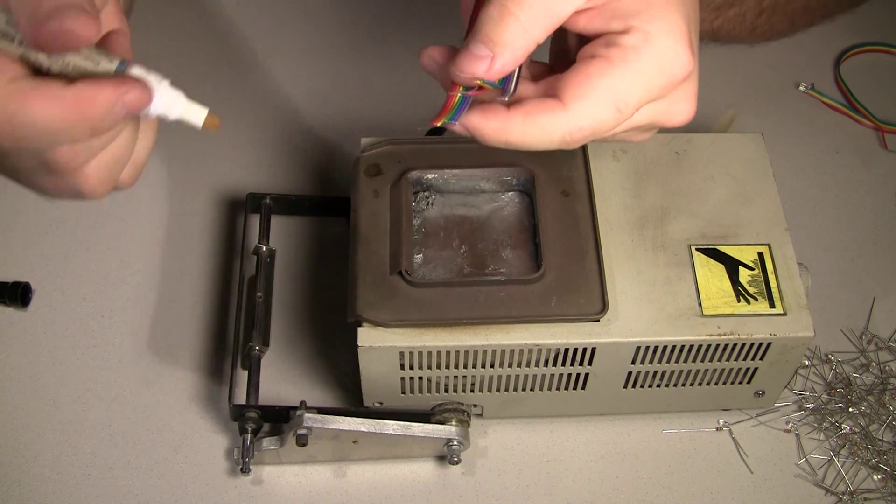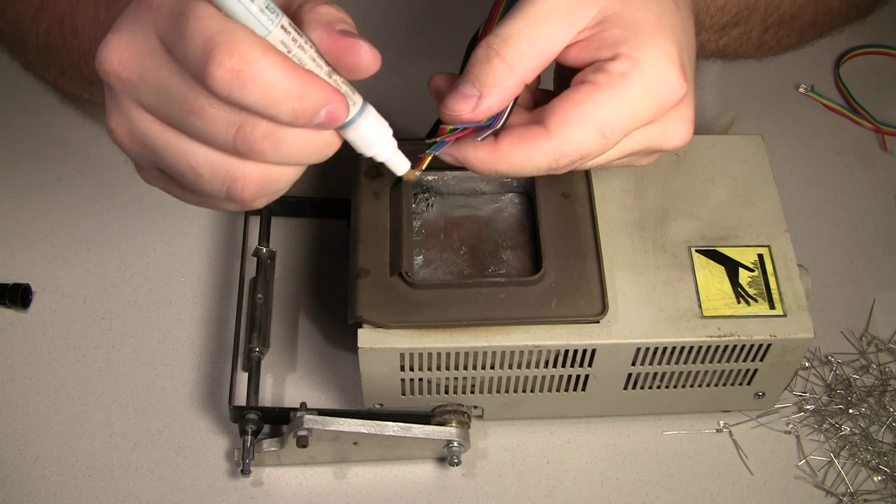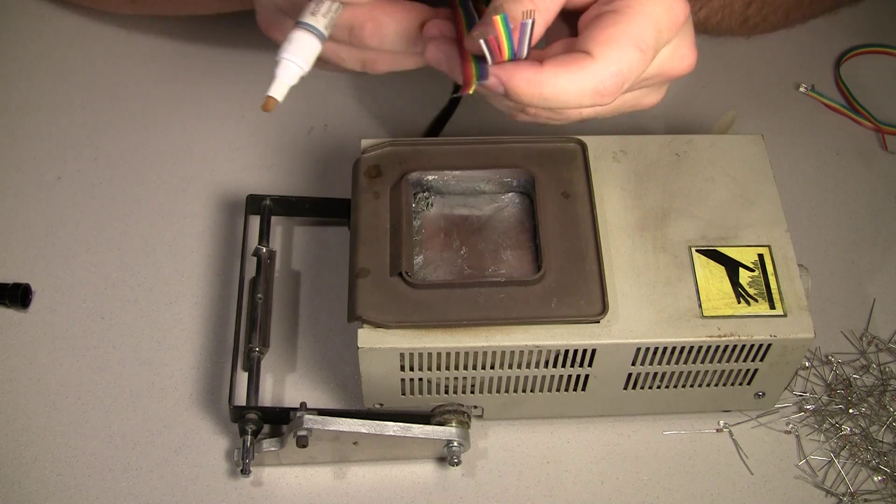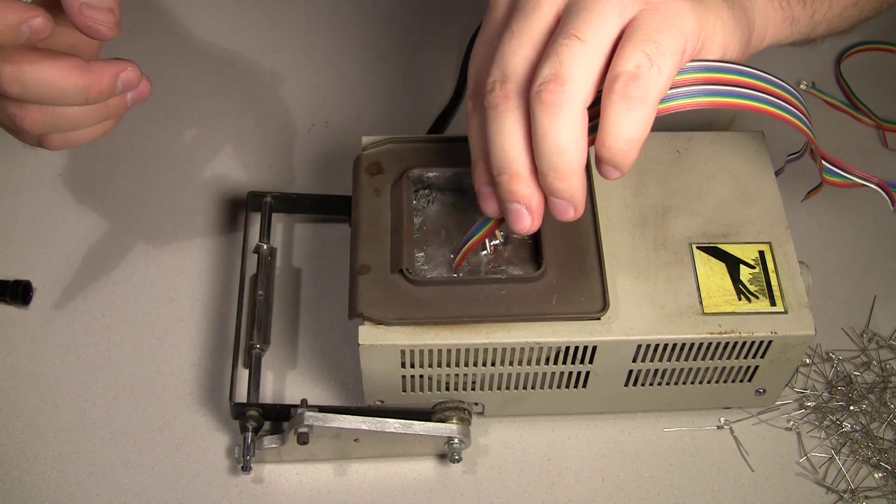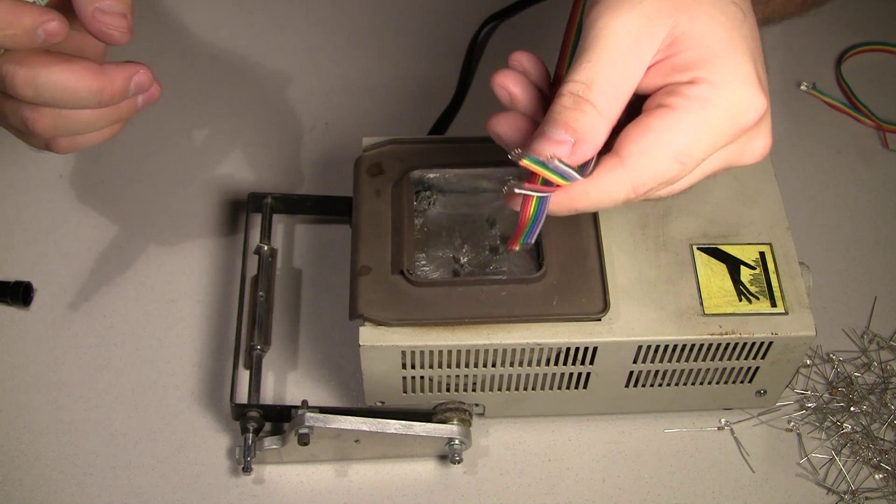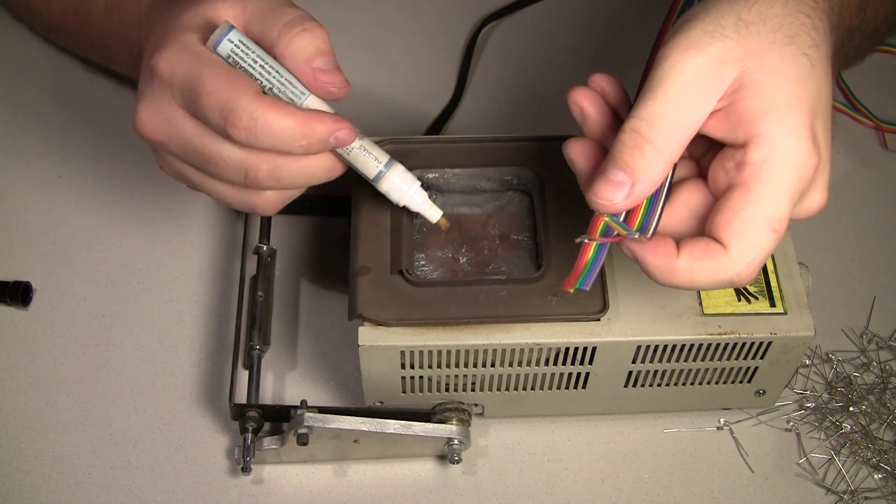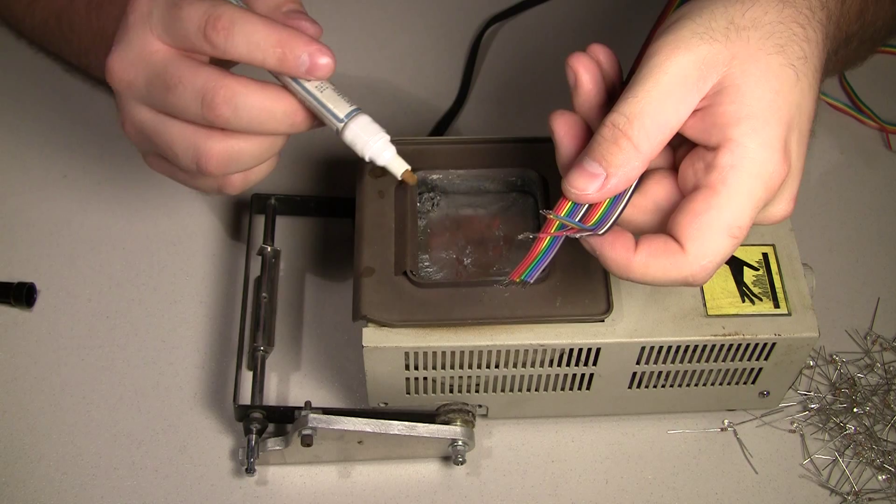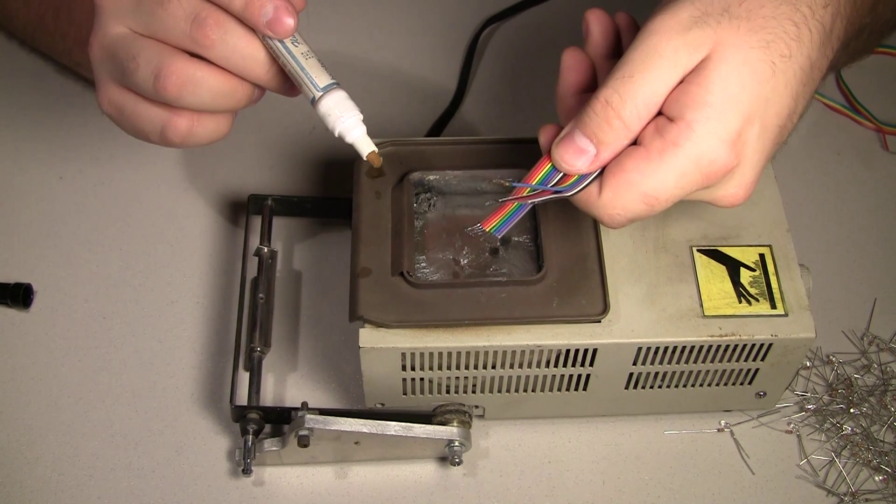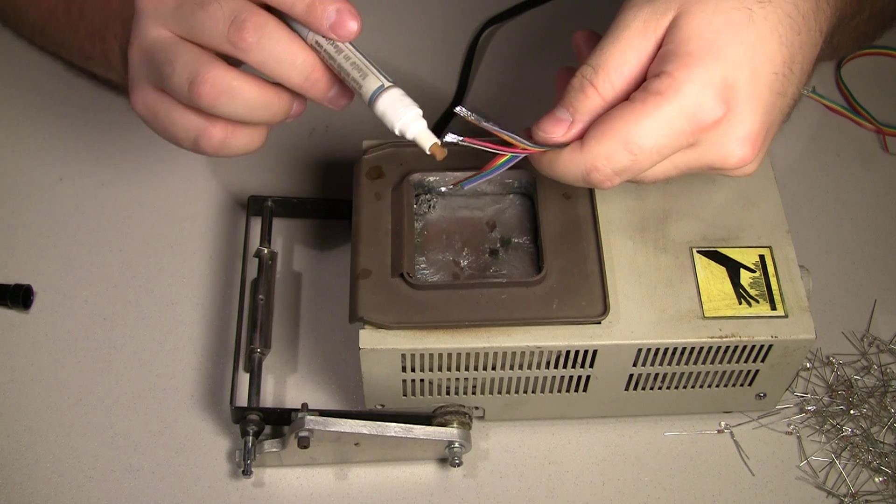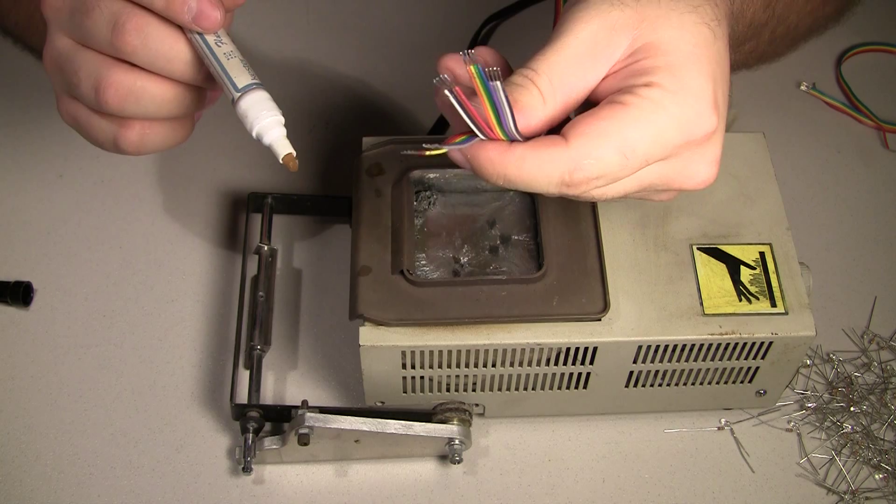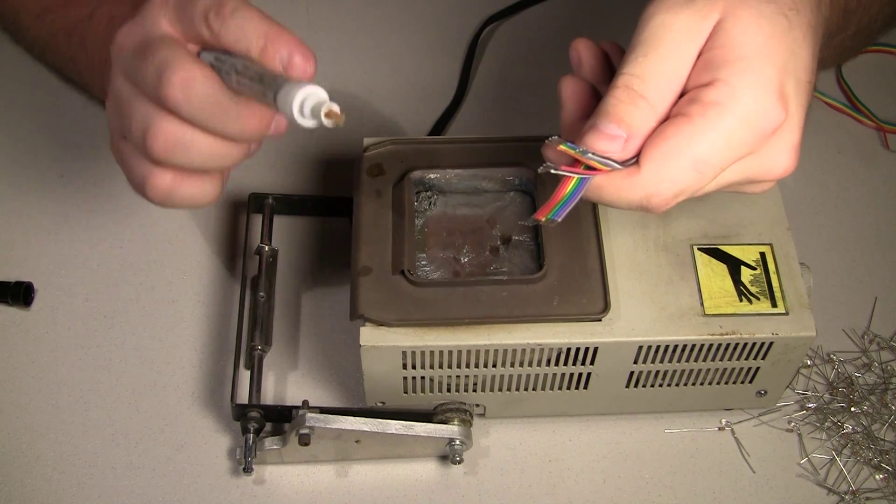Take this flux pen, just run a little flux over all of them. And then I can just dip them in. There it is, pre-tinned. It's that easy. The great thing about this is you don't have to worry about going too far because the solder will not stick to the ribbon cable. So I can go well past the stripped leaves and pull them out and it'll be just fine. The key is you've got to have that flux on there though.